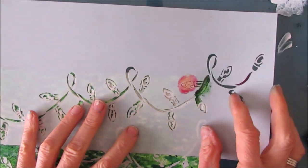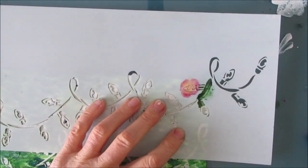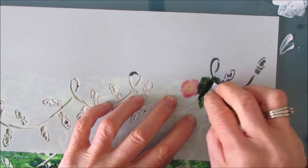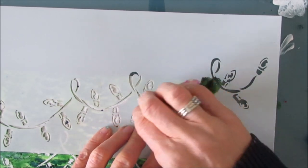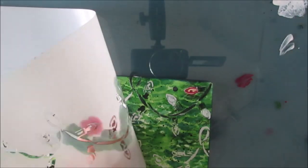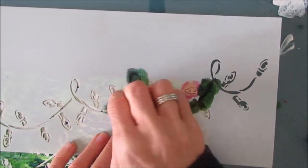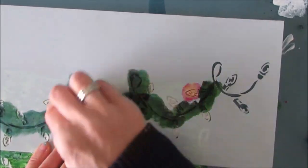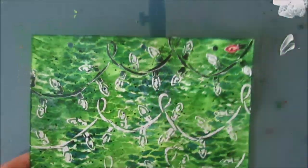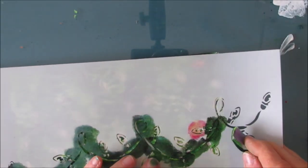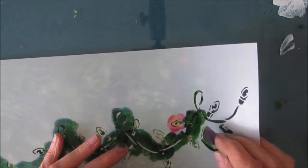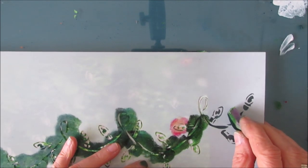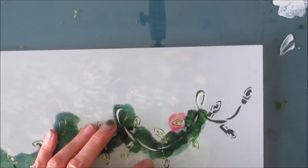Now I'm going to place the stencil back on top and I'm coming in with a mixture of the hooker's green which is the darker green with black to make the wire and the light bulb ends. I'm going to do that with all three tiers of the string of lights.